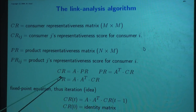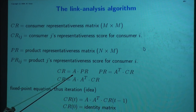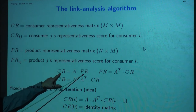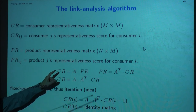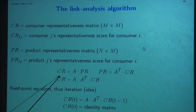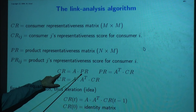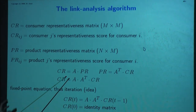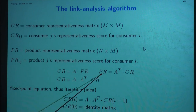We don't know these matrices yet. What we know is A, determined by the shopping behavior of our consumers. We do not know CR and PR — we want to determine them. From the shopping behavior we may derive how similar these customers are. On the other hand, we can write: PR = A^T × CR. And now I can substitute this PR into the first equation to get CR = A × A^T × CR. What we have here is a recursive equation — a fixed point equation — and we can do fixed point iteration on this.